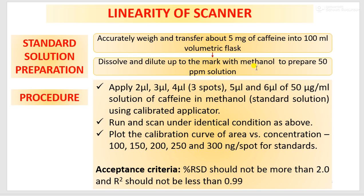Again we have to prepare a 50 ppm solution of standard caffeine in methanol. From this 50 ppm solution, apply 2 µL, 3 µL, and 4 µL — for 4 µL you apply 3 tracks. Then 5 µL and 6 µL. Run the plate under the same conditions and scan the plate, then find out the area for each applied volume. Plot the calibration curve of area versus concentration. If you convert this volume into amount of sample per band, that will correspond to 100 ng, 150 ng, 200 ng, 250 ng, and 300 ng per spot.